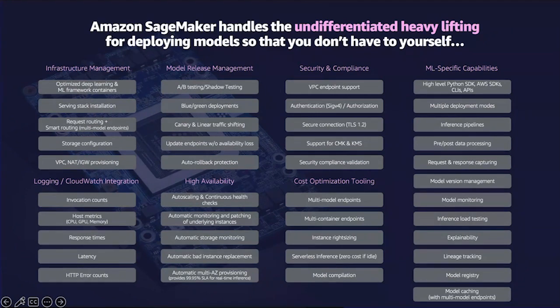You don't have to worry about any hardware failing with SageMaker because the service is built highly available and redundant by default — even across availability zones, you have two or more instances running. Data scientists frequently want to test new models in production. You can do that through deployment strategies such as shadow deployments, shadow testing, A-B testing, canary and linear deployments, which act as guardrails to easily move between different models in production.